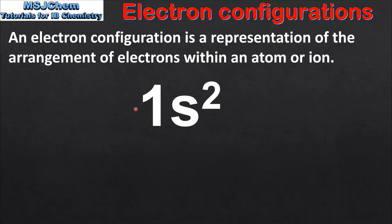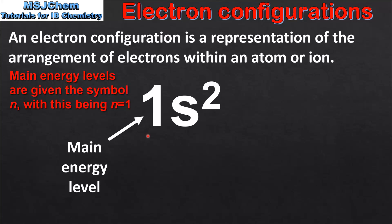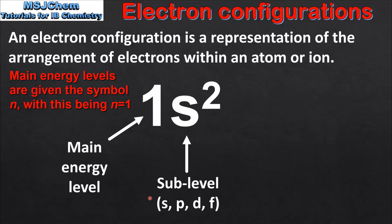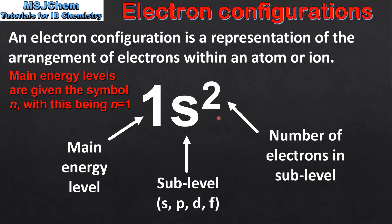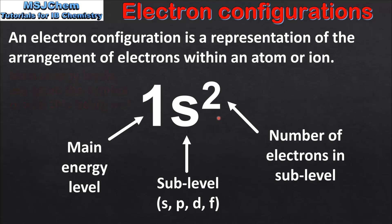Here we can see the electron configuration for the noble gas helium, which is 1s2. The 1 refers to the main energy level or principal energy level. The s refers to the sublevel — this letter can either be s, p, d, or f. And then we have the number written as a superscript, which tells us the number of electrons in that sublevel.